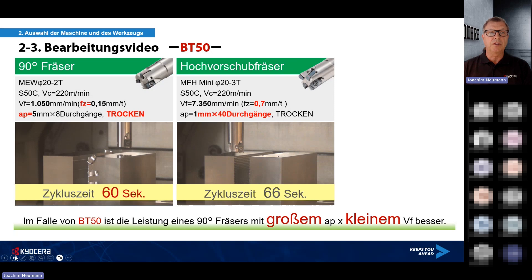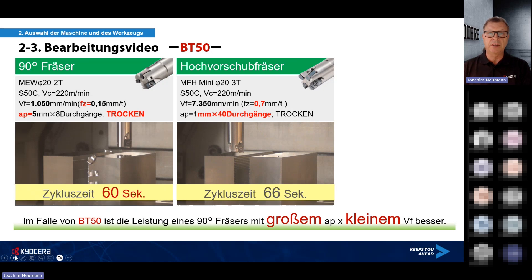Auf der BT50-Maschine zeigt sich: Mit der großen Zustelltiefe und der steifen Maschine erzielt man mit dem 90-Grad-Fräser eine Bearbeitungszeit von 60 Sekunden, verglichen mit 66 Sekunden mit dem Hochvorschubfräser. Die kürzeste Bearbeitungszeit wird auf der großen BT50-Maschine mit dem 90-Grad-Fräser erzielt.